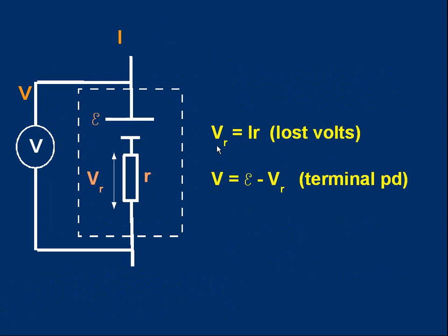Two important points: first, V subscript R is the current times the internal resistance and it's referred to as the lost volts. Second, the terminal PD — the voltage between the terminals of the cell — is the EMF minus the lost volts.